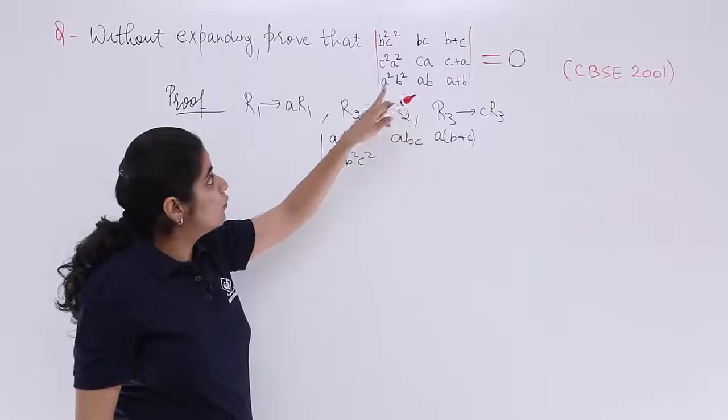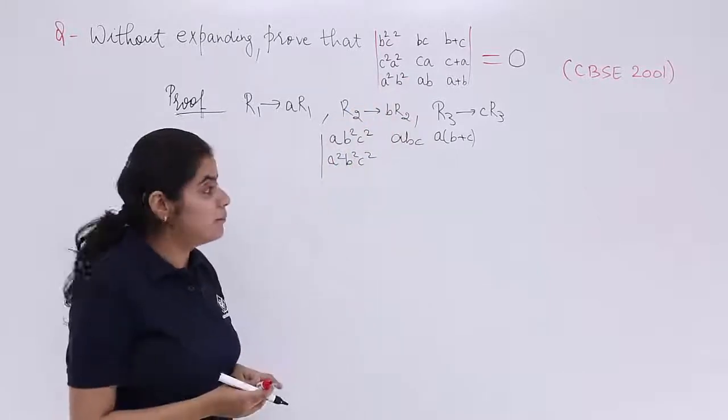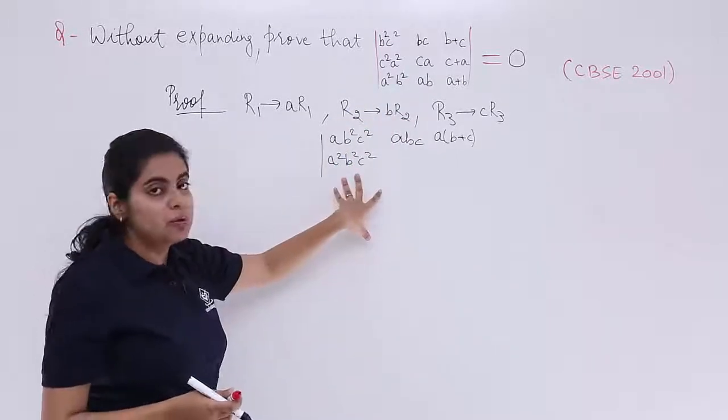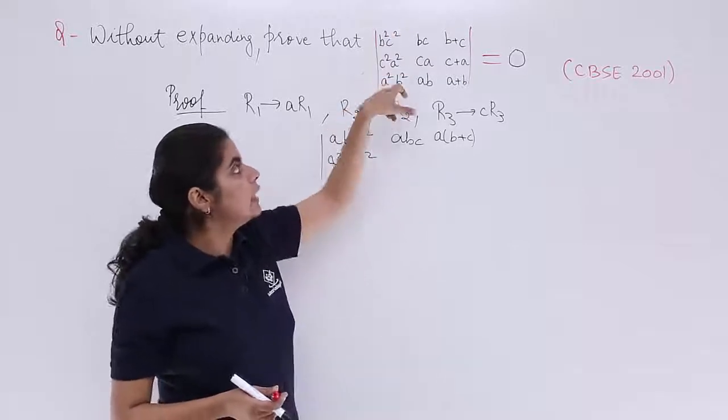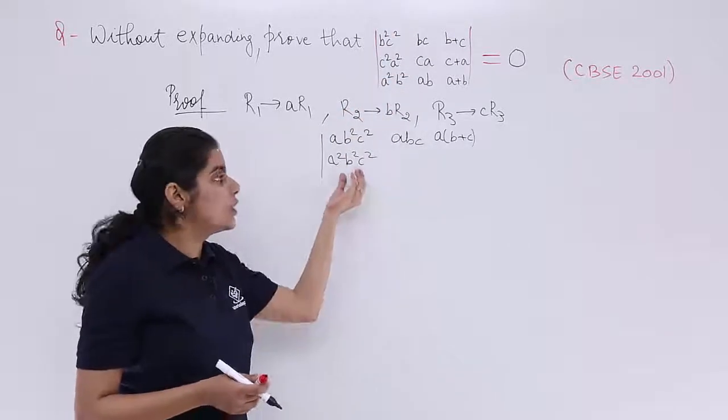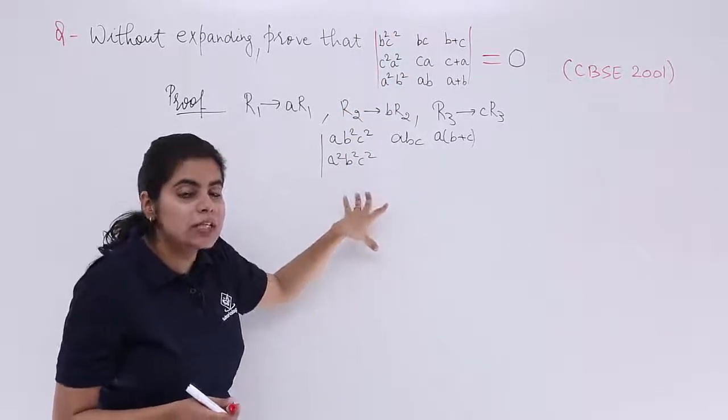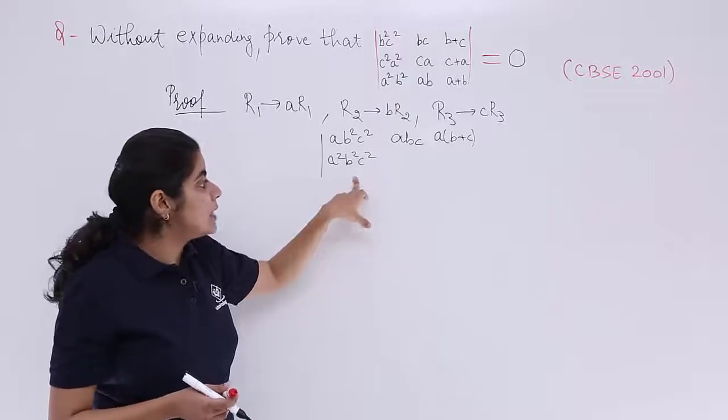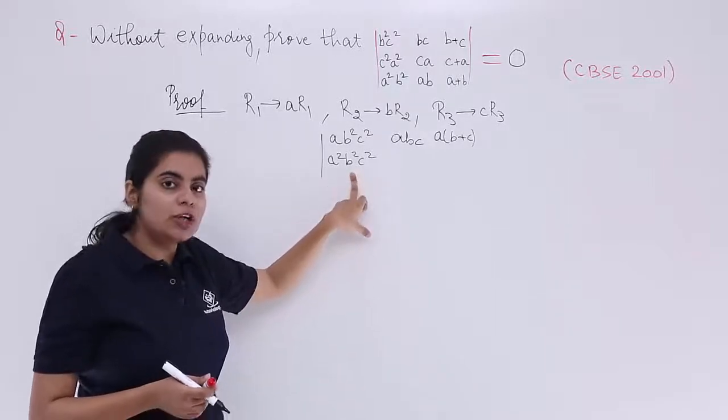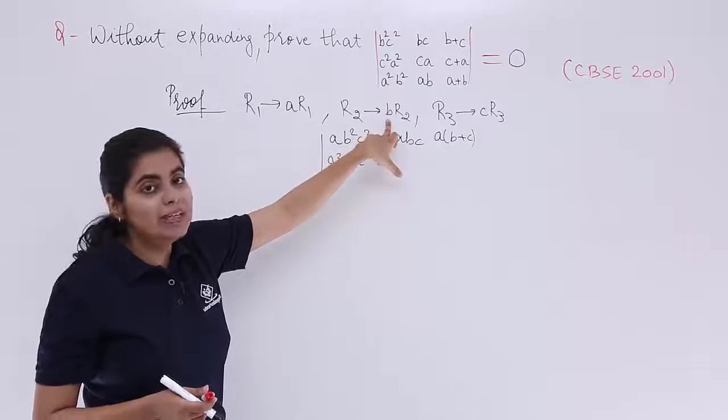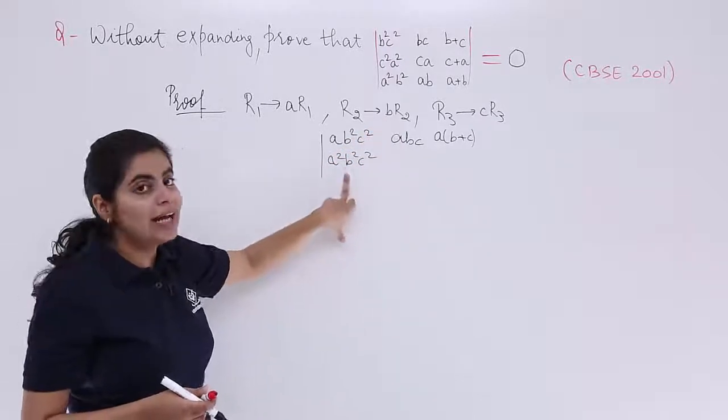Because ultimately what you are doing is you are multiplying by B. Now what people confuse here is that since everything is in square, you write here B square. I intentionally wrote this to make you understand that this is a mistake. What you need to do is you are multiplying by B and not B square. So do not write here B square.